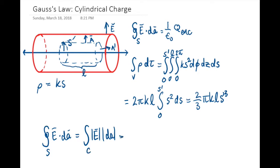We then also note that by symmetry, the electric field must be the same everywhere on that surface. So we're just integrating over the surface itself, and the area of that curved surface must be 2π s prime l, because s prime is the radius and l is the length.